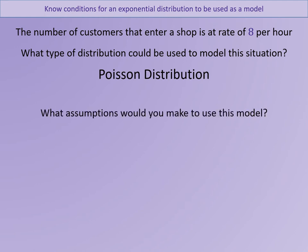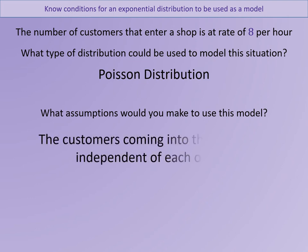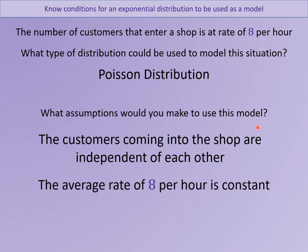If it is going to be a Poisson distribution, what sort of assumptions must you make? The customers that come into the shop should be independent of each other — not a group from a bus coming in all at the same time. Each person is independent of any other person. You also need to assume the rate of eight per hour is constant — always eight per hour, not different first thing in the morning versus five o'clock in the afternoon.